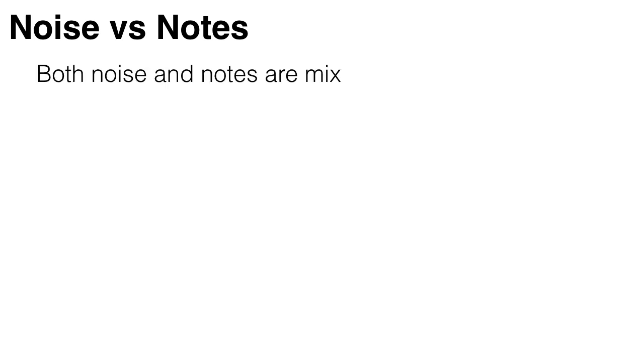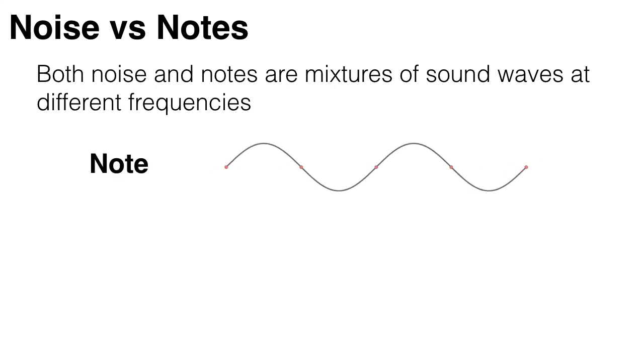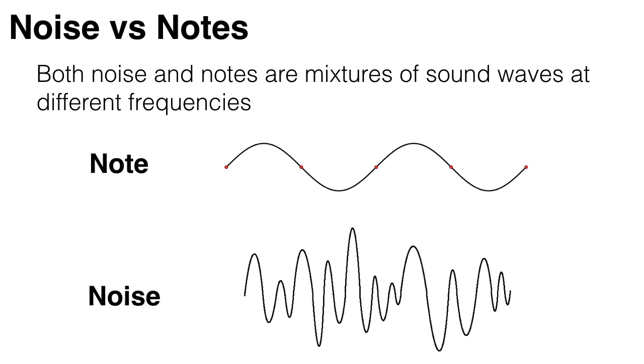Both noise and notes are mixtures of sound waves at different frequencies. A note is made up of a ripple pattern which repeats itself over and over again in an ordered way, while a noise is made up of individual ripples which have no relationship to each other and do not repeat, and so are disordered.